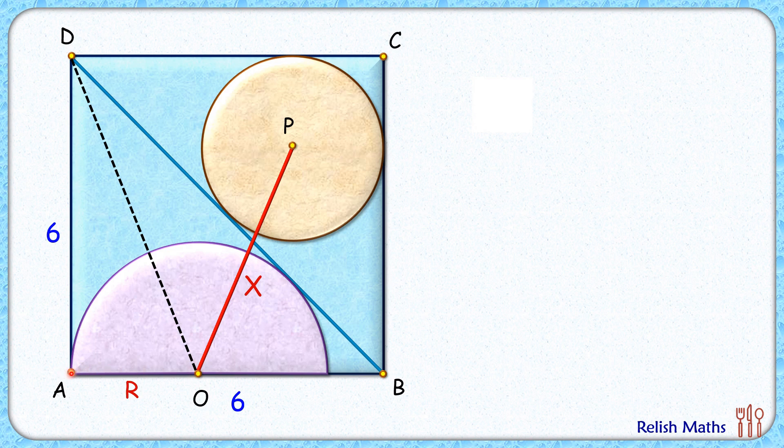First, let's find the radius of this semicircle. Let's consider the triangle DAB. This is an isosceles right angle triangle with side lengths 6 and 6 centimeters. Thus by Pythagoras theorem, the length of DB will be 6√2 centimeters. Now in this semicircle, DA and DB are the tangents.